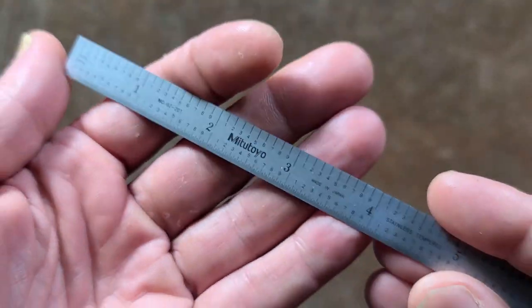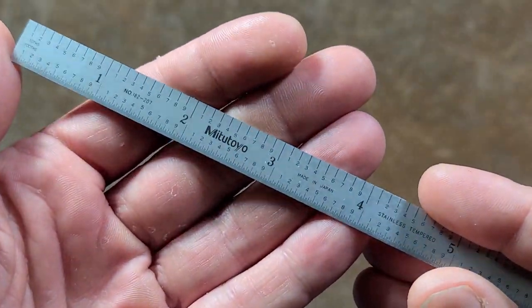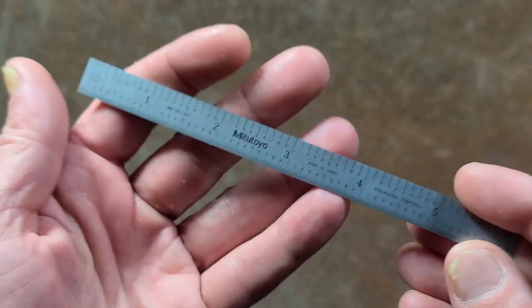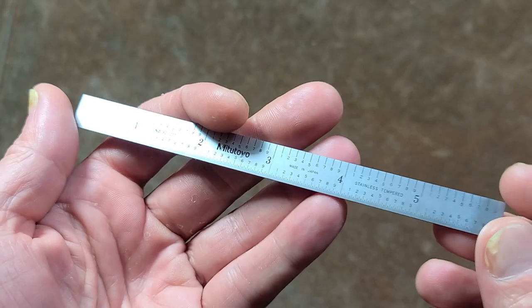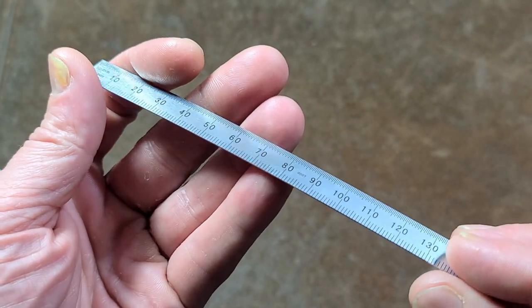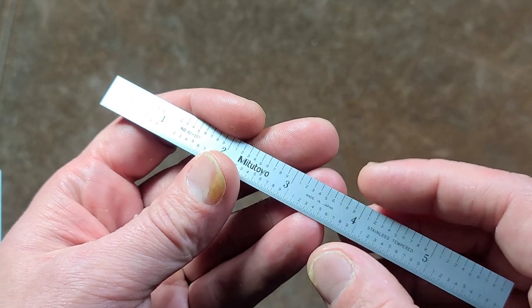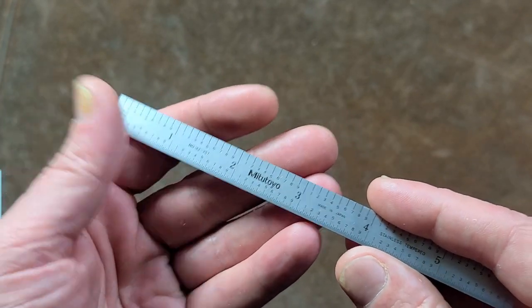Okay, it's Maximus here, this time with a short video about this Mitutoyo 6-inch machinist scale or rule. I was corrected that these should be properly called scales. These are very thin, small 6-inch rulers versus the three-quarter inch wide rigid machinist rules.